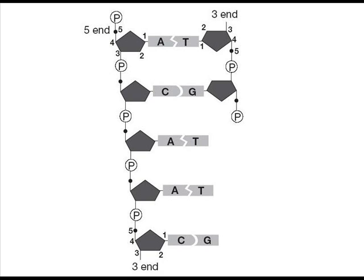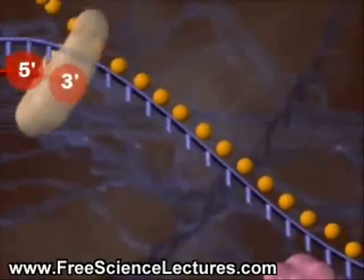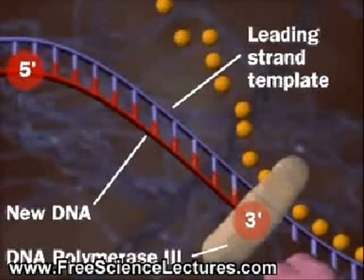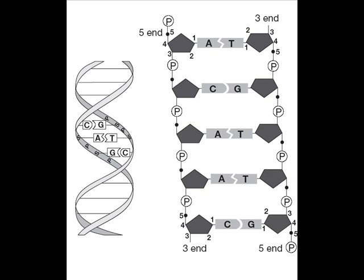So if we have another look at the video now, we'll be able to see that we've got the DNA polymerase 3 molecule moving along, and it's moving in the direction where it's adding a new nucleotide onto the third carbon atom of the sugar molecule. Now looking at the image again on your screen, we've got the image from the coursebook — it's basically a diagram of DNA.